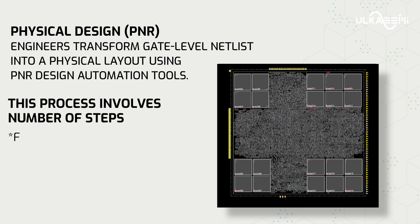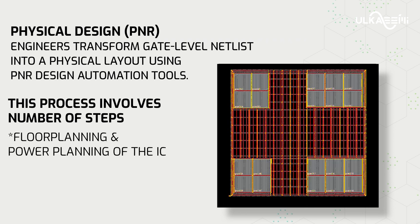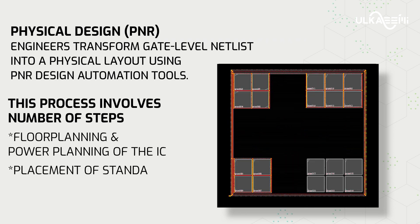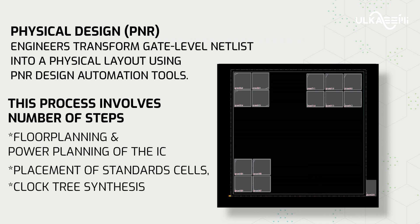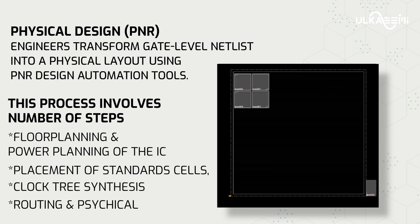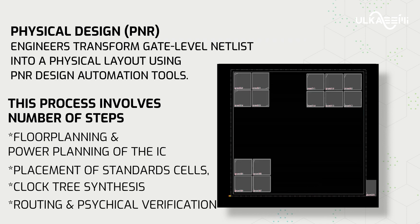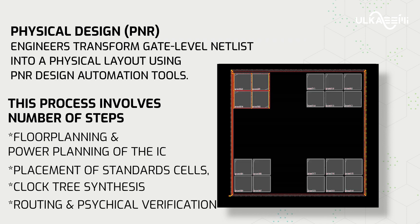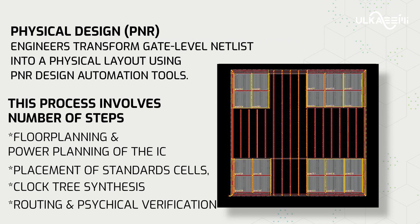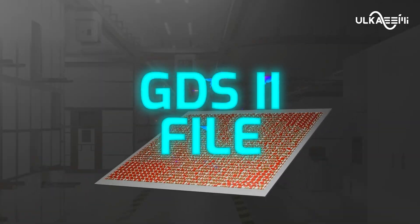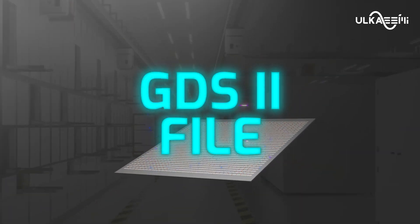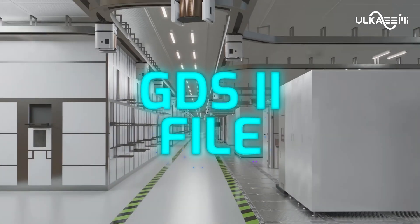This process involves a number of steps: namely floorplanning and power planning of the IC, placement of standard cells, clock tree synthesis, routing, and physical verification. Eventually, the P&R design tool outputs a GDS2 file which is sent for fabrication.